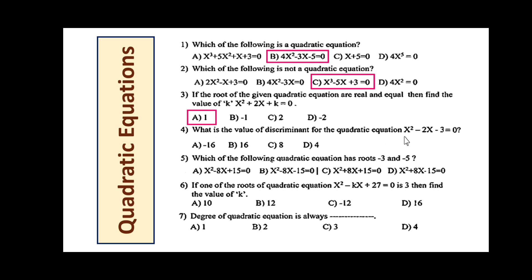What is the value of the discriminant for x² - 2x - 3 = 0? After solving, the discriminant value is 16. Which quadratic equation has roots -3 and -5? Option B has roots -3 and -5. If one root of x² - kx + 27 = 0 is 3, then k = 12. The degree of a quadratic equation is always 2.